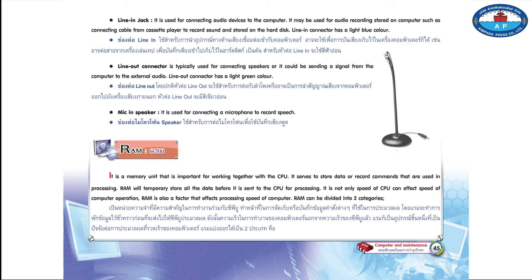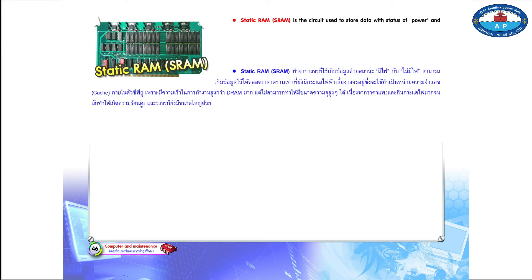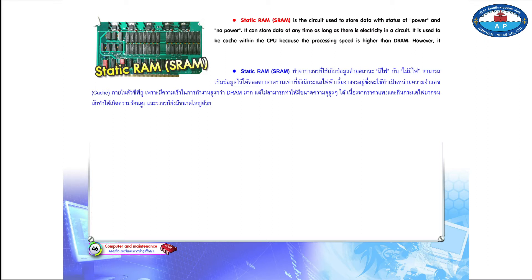RAM can be divided into two categories. Static RAM (SRAM) is the circuit used to store data with a status of power and no power. It can store data at any time as long as there is electricity in the circuit. It is used as cache within the CPU because the processing speed is higher than DRAM. However, it cannot be made to have a high capacity because it is expensive and consumes much power, which often results in high heat, and it also has a large circuit.